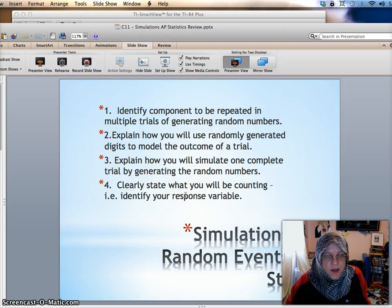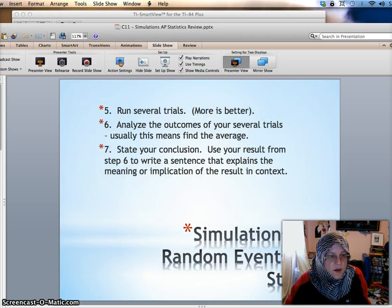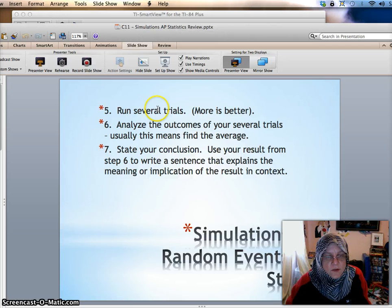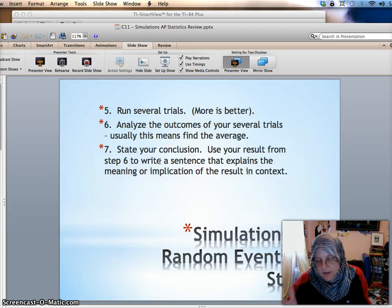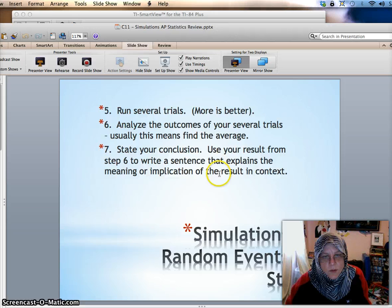Number four, clearly state what you will be counting. In other words, what is it that we're measuring here? I'm measuring the number of times a person has to shoot a basket until they make a free throw, maybe. Or how many times they have to take a driver's test until they pass. Whatever it is that you're measuring. And then next we have run several trials. If you're doing this for real data, you need to do many trials, maybe with a computer. Maybe you can get a thousand or a hundred trials pretty easily with a calculator. Maybe you get 30. Just depends on your situation, but more is better. And then analyze the outcomes of your several trials. Usually this means finding the average and then stating your conclusion. So, for example, you might say this person is a 70% free throw shooter on average would need to throw five times until they make a basket according to our simulation.